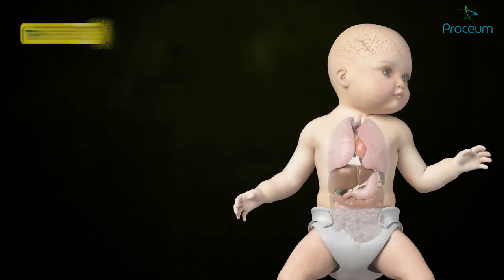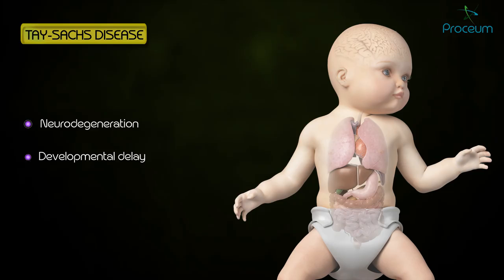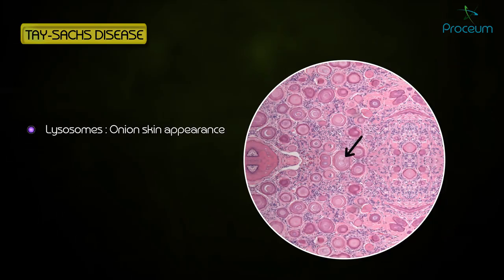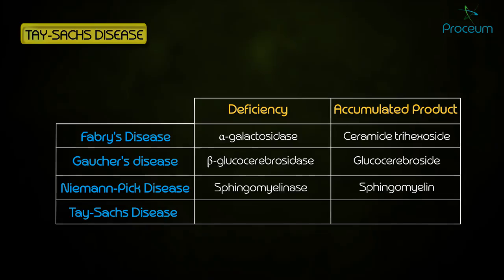Tay-Sachs disease presents with progressive neurodegeneration, developmental delay, cherry red spots on the macula, and lysosomes that appear like onion skins. Notably, there is no hepatosplenomegaly. Tay-Sachs has a deficiency in hexosaminidase A, leading to an accumulation of GM2 gangliosides.